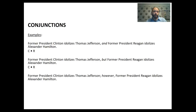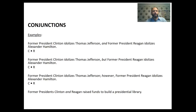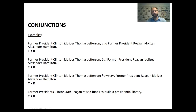'Clinton idolizes Jefferson. However, Reagan idolizes Hamilton.' Again, C dot R. And this is an interesting example: 'Former Presidents Clinton and Reagan raised funds to build a presidential library.' Here again we have two statements — Clinton raised funds, and Reagan raised funds — joined by AND. So we'd get C dot R. You can see how if you have a compound subject, you'll automatically need a dot somewhere. And if you have a compound predicate, you'll also need a dot somewhere.